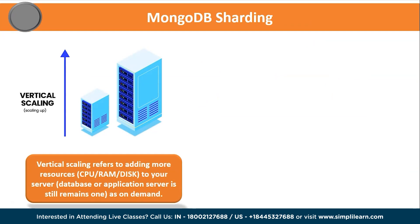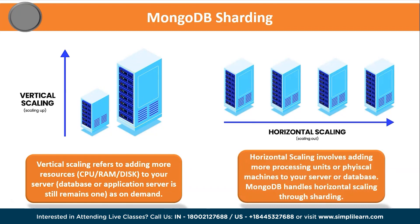We can scale in two ways. Vertical scaling refers to adding more resources — for example, adding a new CPU, increasing RAM, or adding disk size to your server based on demand. Horizontal scaling involves adding more processing units or physical machines to your server or databases, used to divert a large dataset across multiple systems and serve a data application to query data from multiple servers. MongoDB handles horizontal scaling through sharding.